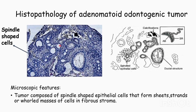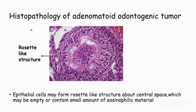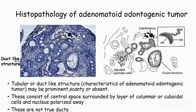These tumors contain spindle-shaped epithelial cells that may be in the form of sheets, strands, or rolled masses of cells in a fibrous stroma. Epithelial cells may form rosette-like structures where the central portion may be empty or show some eosinophilic material.